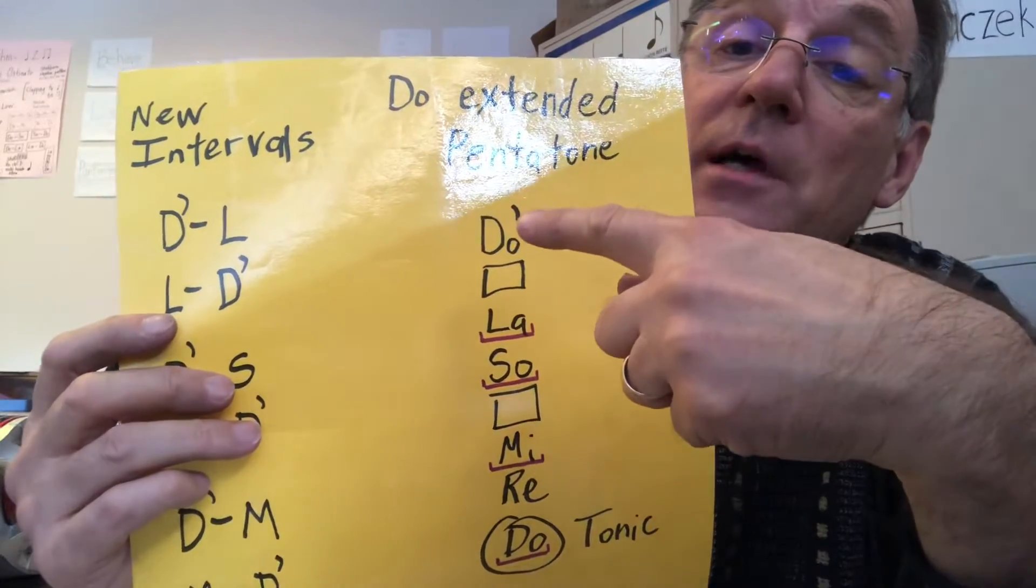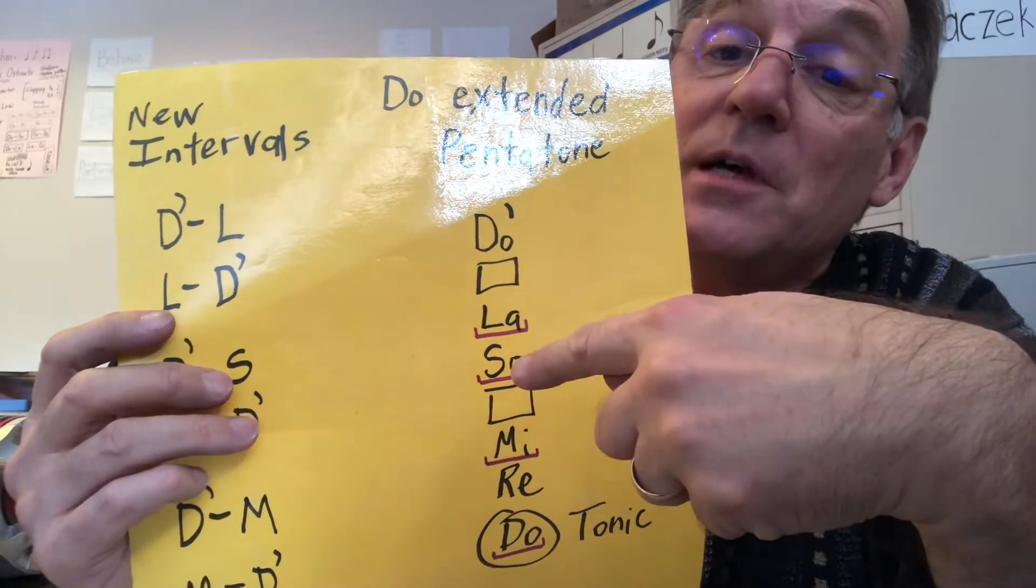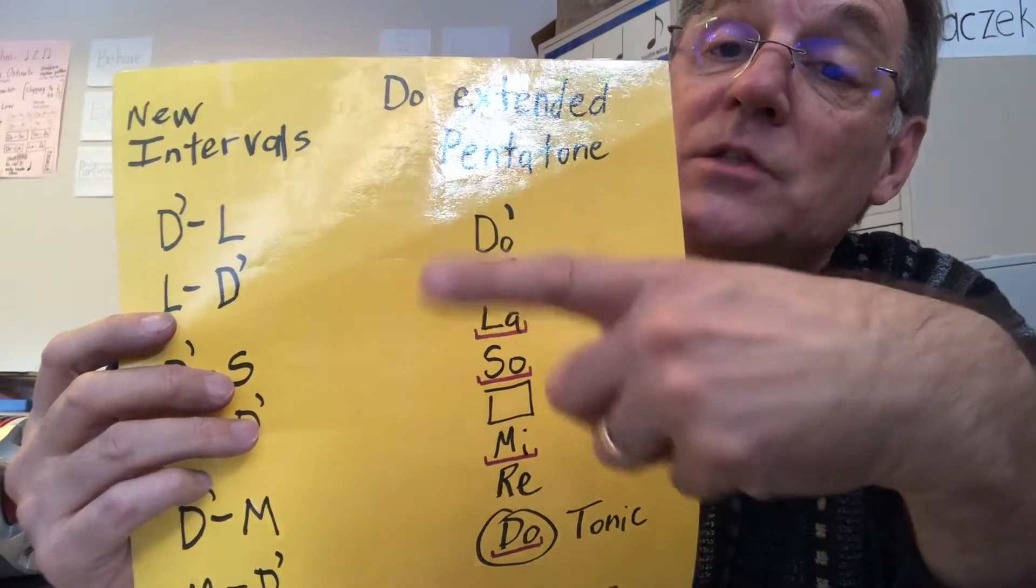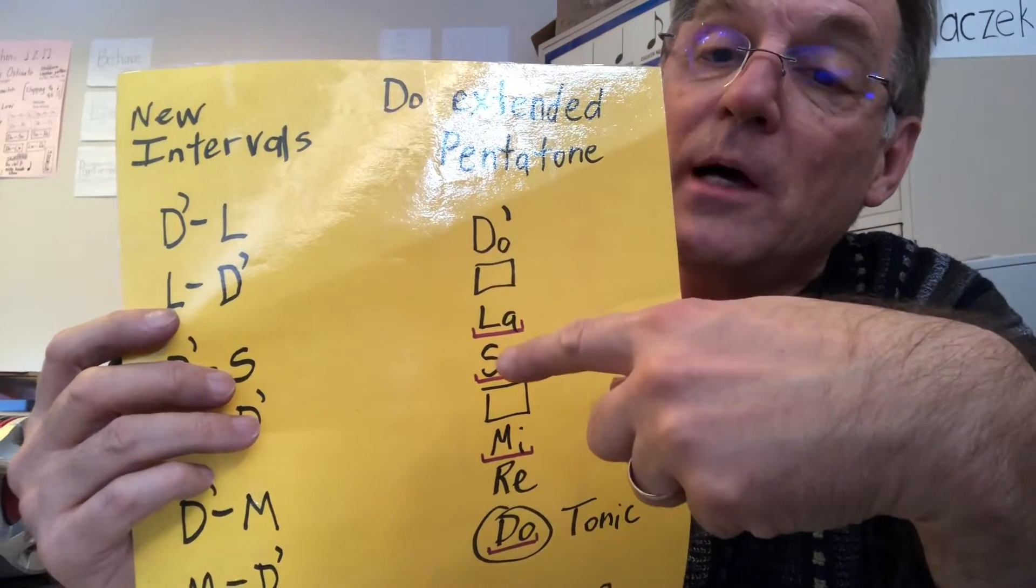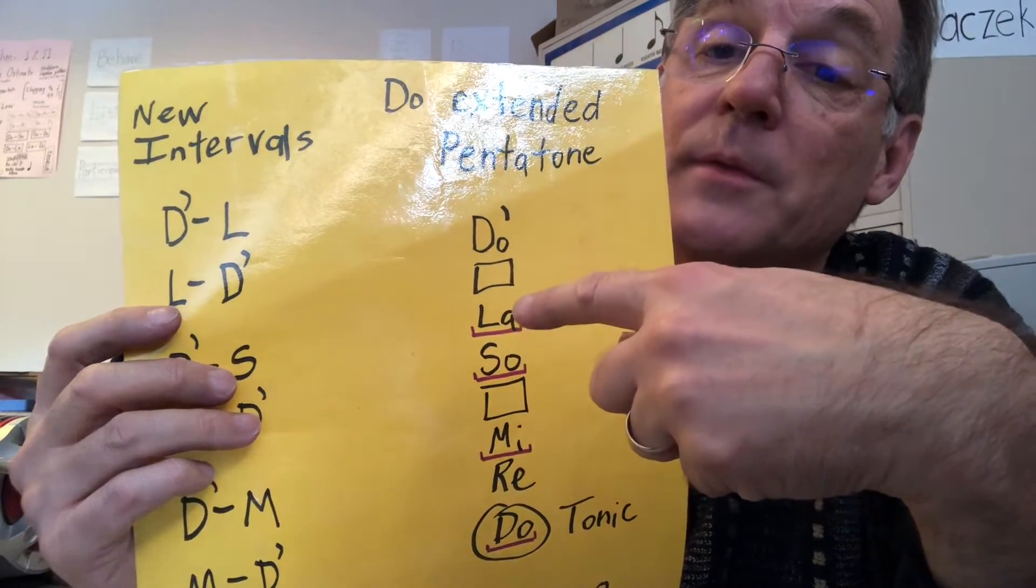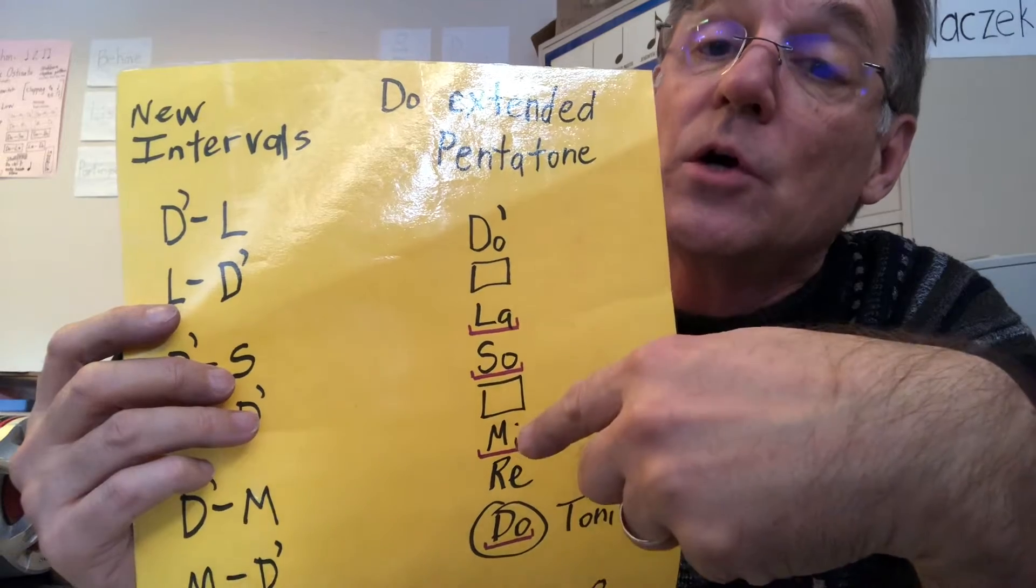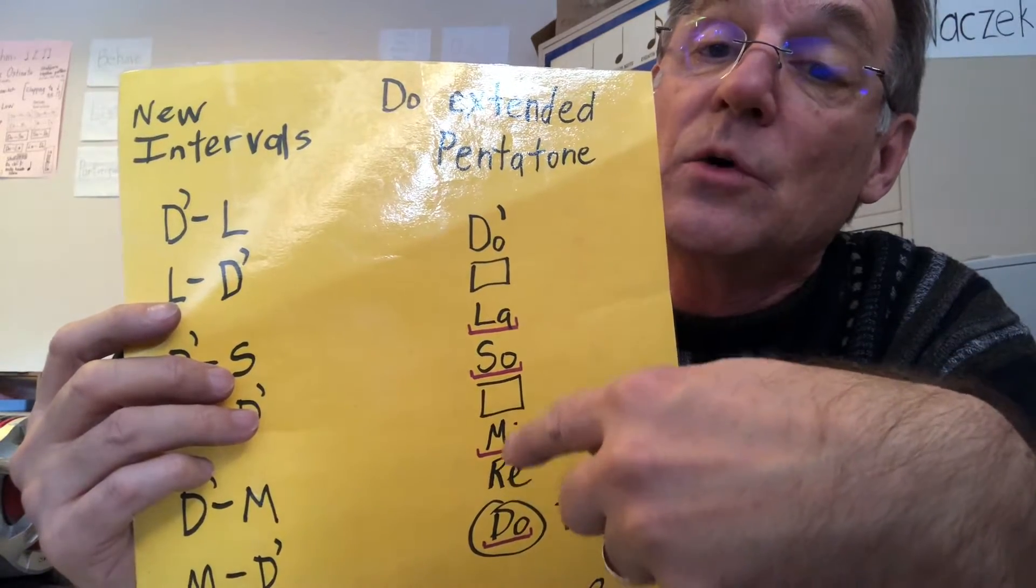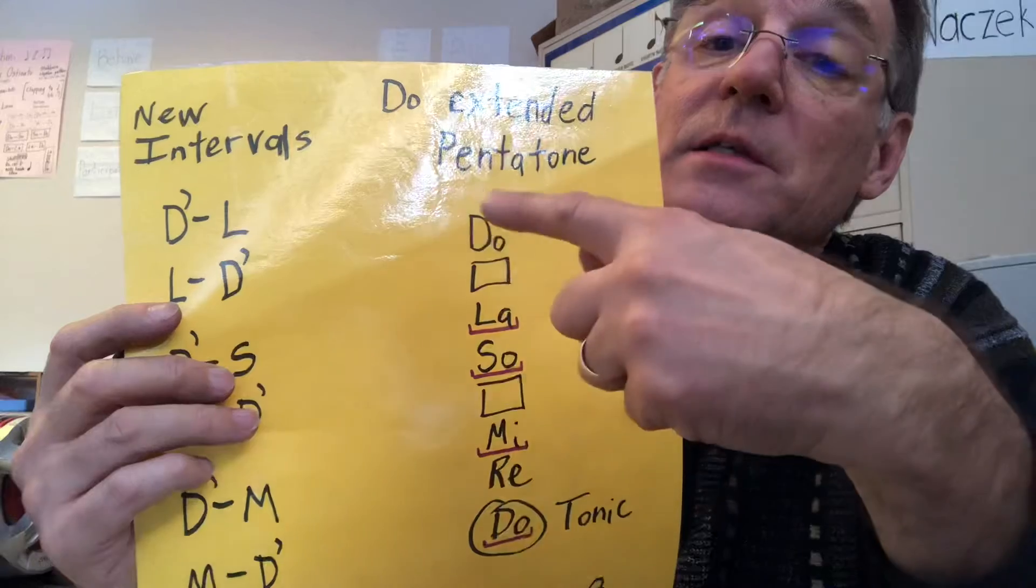So I start with one sound. I skip one sound. I go back up to it. So I went Do, skip La, and then go up to it. Skip Sol, go up to it. Skip Mi, go up to it. Skip Re. So it sounds like this.